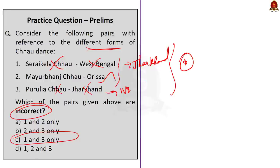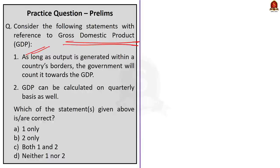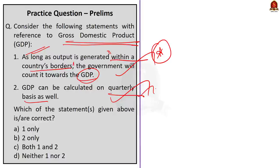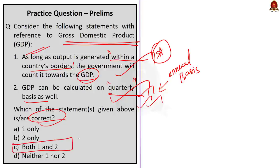The second question is about GDP. It is a two-statement question. Statement 1 says: as long as output is generated within a country's borders, the government will count it towards GDP — this is correct, as GDP does not distinguish based on nationality. Statement 2 says: GDP can be calculated on a quarterly basis as well — this is also correct. Generally it is calculated annually, but quarterly calculation is also done. The question demands correct statements, so the answer is option C: both 1 and 2 are correct.